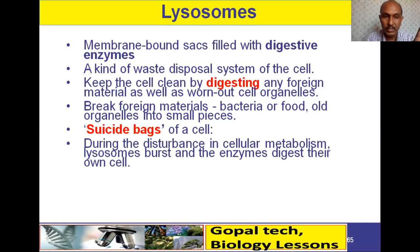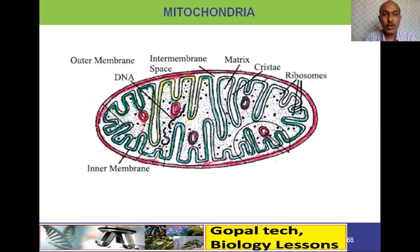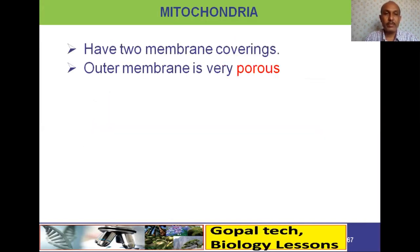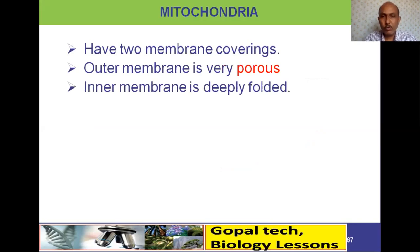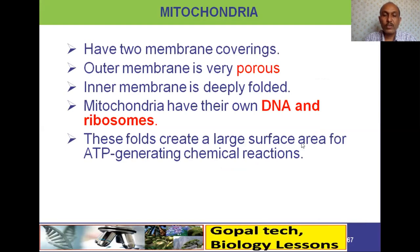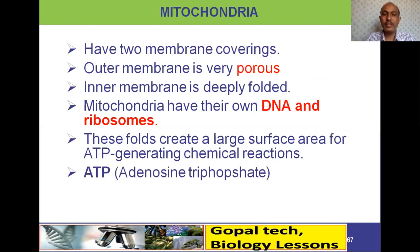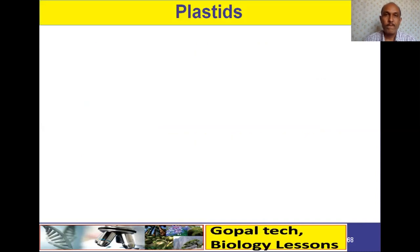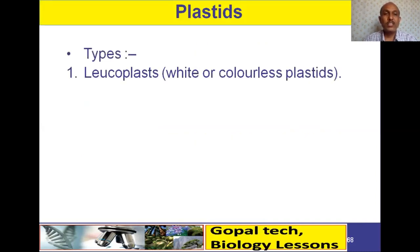Mitochondria have two membranes — an outer membrane and an inner membrane. They have their own DNA and ribosomes. The outer membrane is smooth while the inner membrane is deeply folded. These folds create a large surface area for the synthesis of ATP — adenosine triphosphate. ATP is called the currency of the cell, and therefore mitochondria are called the powerhouse of the cell.